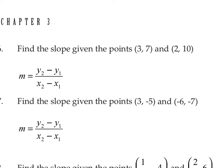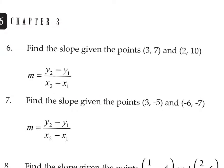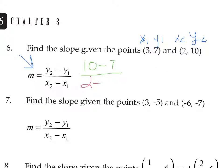Let's label these as X1, Y1, X2, Y2 and fit them into the formula. Y2 minus Y1 is 10 minus 7 in the numerator; X2 minus X1 is 2 minus 3 in the denominator. Simplifying: 10 minus 7 gives 3, and 2 minus 3 gives negative 1. Three divided by negative one makes negative 3, so this is a slope of negative 3.